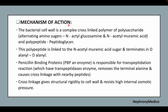Mechanism of action: the bacterial cell wall is a complex cross-linked polymer of polysaccharide with alternating amino sugars N-acetylglucosamine and N-acetylmuramic acid, and polypeptide — hence peptidoglycan. This polypeptide is linked to the N-acetylmuramic acid sugar and terminates in D-Ala-D-Ala. Penicillin-binding proteins are responsible for the transpeptidation reaction, and the cross-linkage gives structural rigidity to the cell wall and resists high internal osmotic pressure.